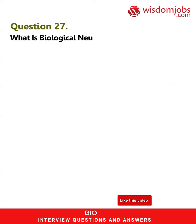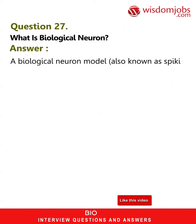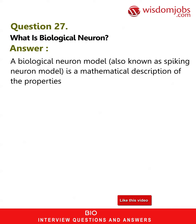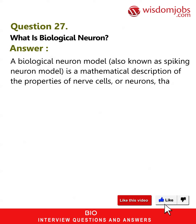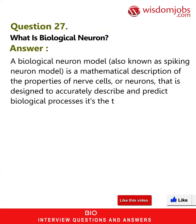Question 27: What is a biological neuron? A biological neuron model, also known as the spiking neuron model, is a mathematical description of the properties of nerve cells or neurons, designed to accurately describe and predict biological processes. It involves the training of neurons using artificial neural networks (ANN).